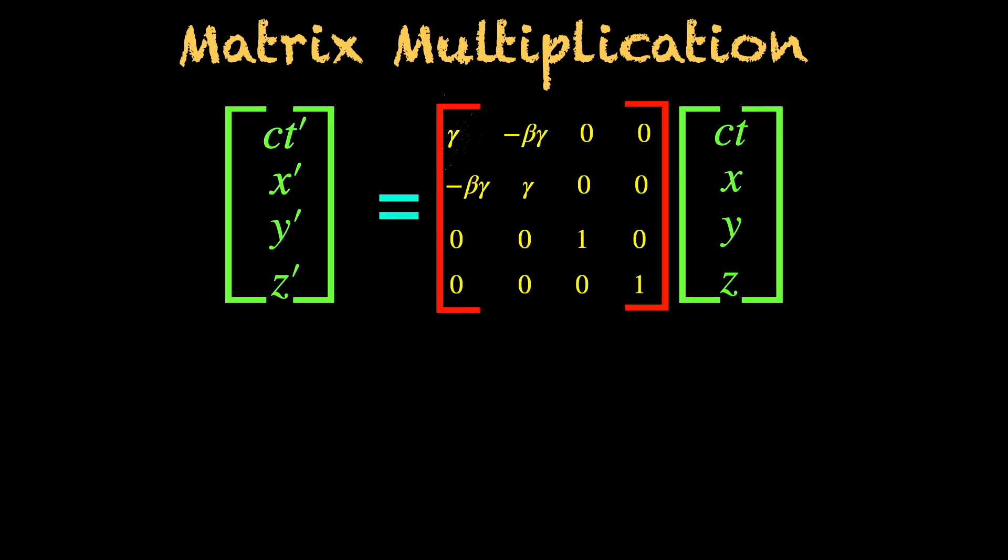Take the four entries in the first row of the lambda matrix from left to right, multiply each with the corresponding column entries of the x nu column matrix taken from top to bottom, then add the results together. This gives the first entry of the column matrix on the left. A slight algebraic simplification and you have got the first equation of the Lorentz transformation, giving ct prime in terms of ct and xyz.